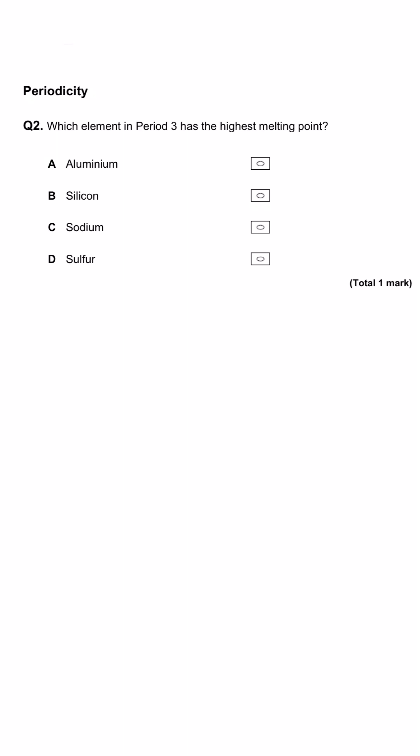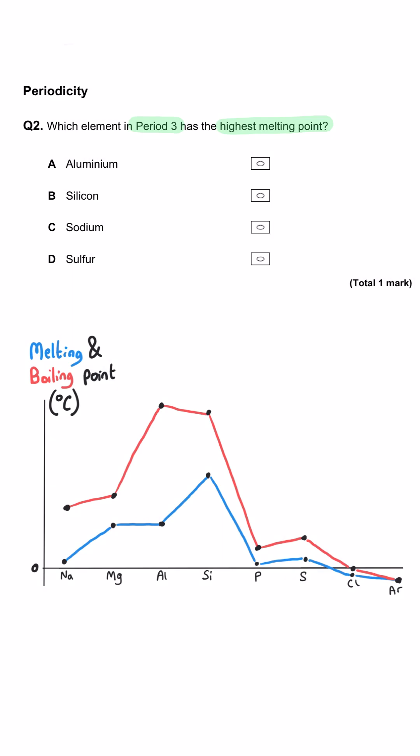Which element in period 3 has the highest melting point? Well, here are the patterns for melting point and boiling point across period 3, with the melting point being the blue line here.